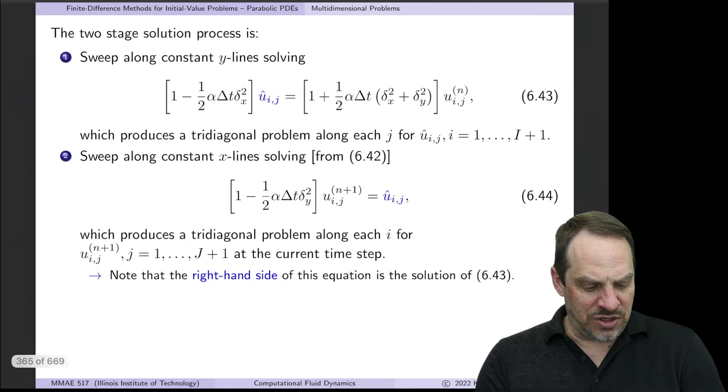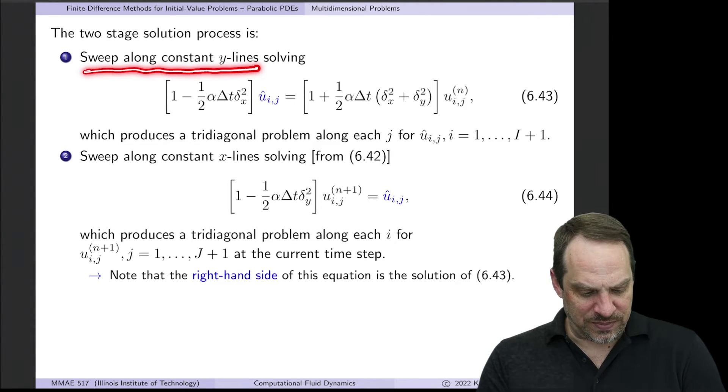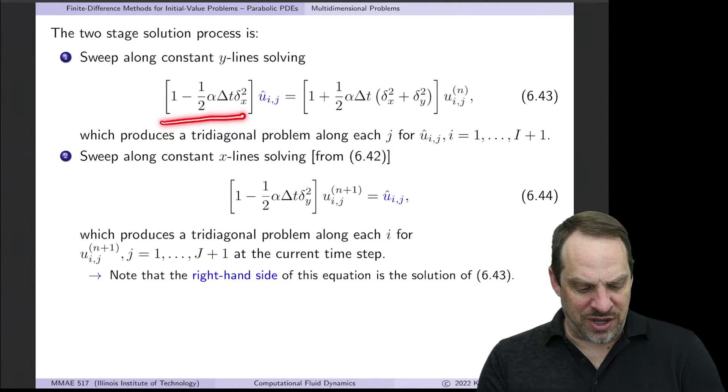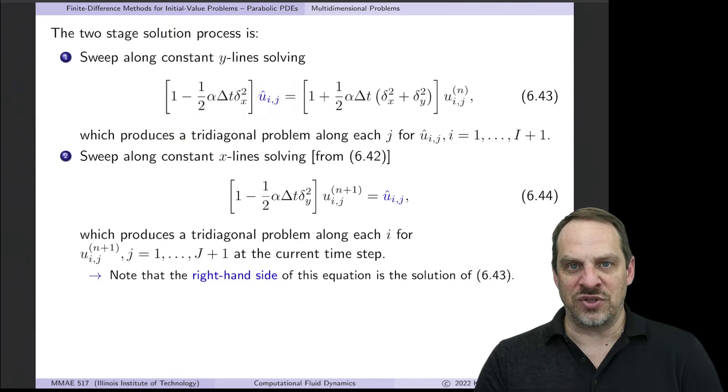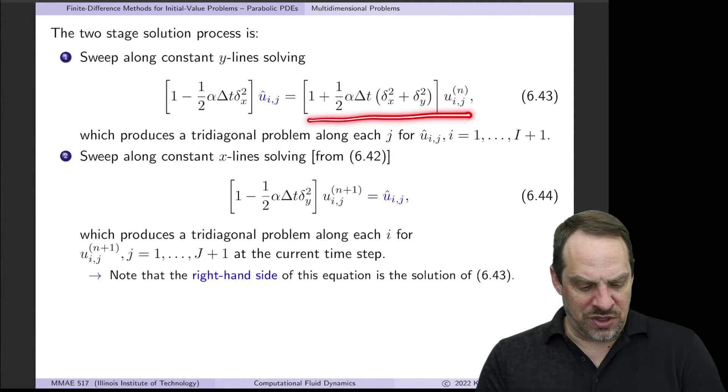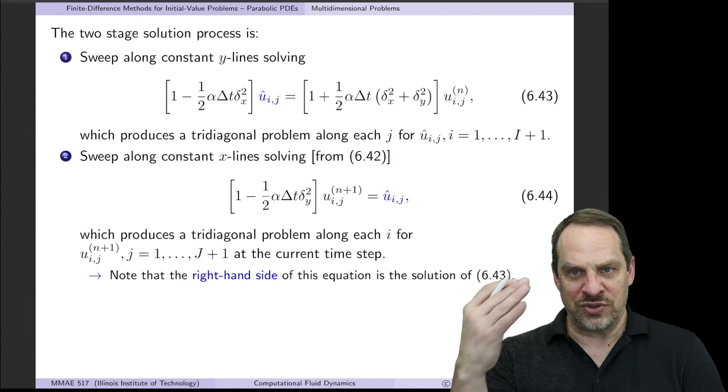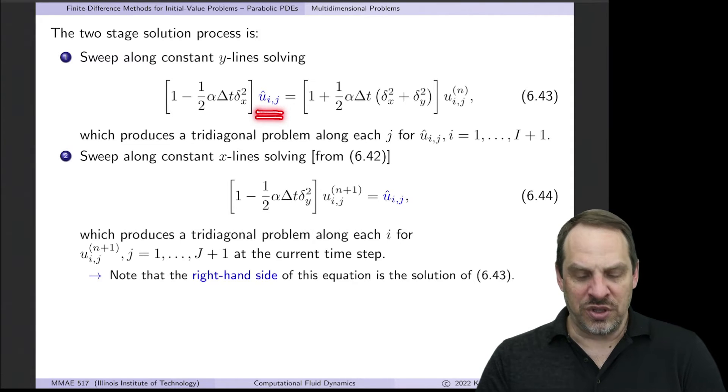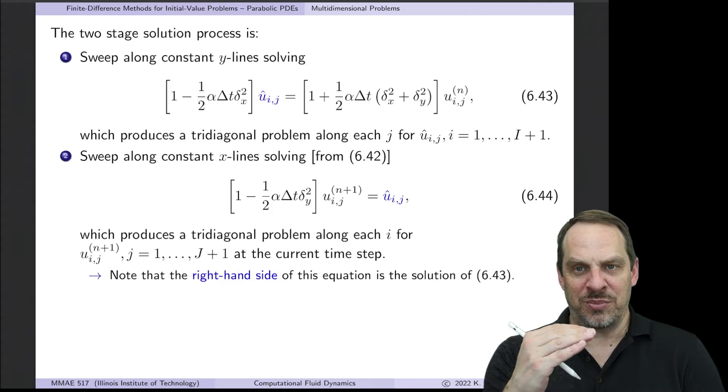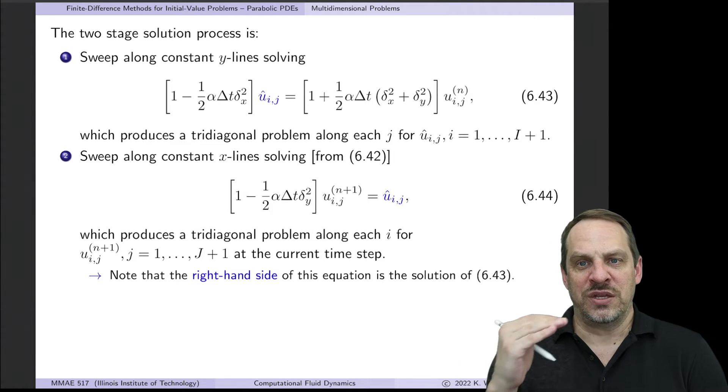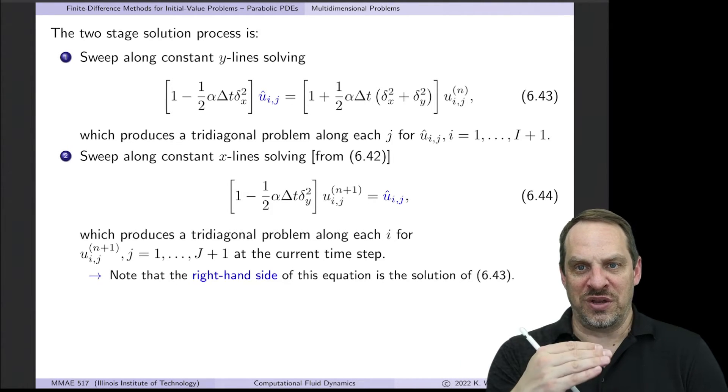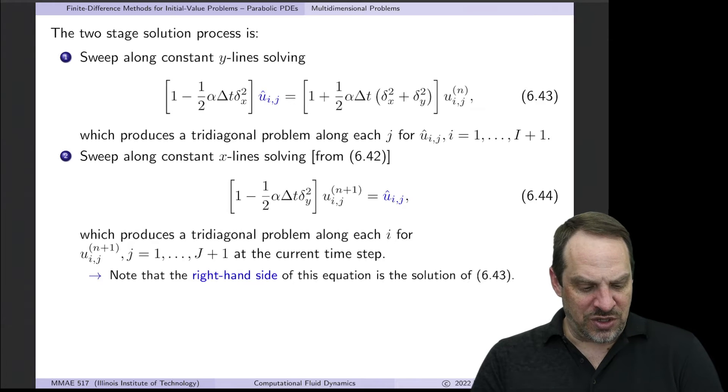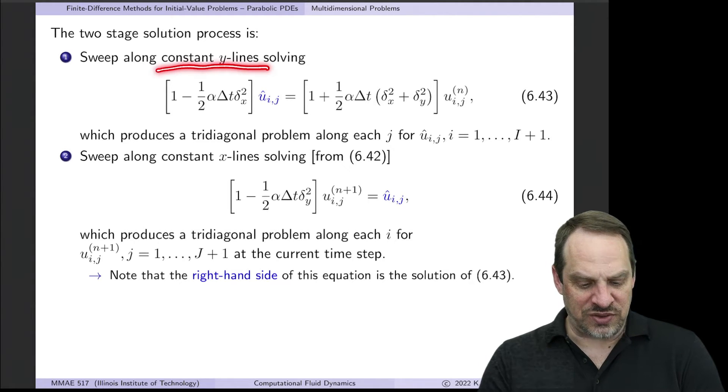So when we sweep along constant y lines, we're going to solve this expression here that I just mentioned. It's the x operator, operating on this new variable, u_ij hat, with all the other stuff on the right. When we solve that, all these tridiagonal solves, as before, because they're tridiagonal problems, we will actually get a solution for this intermediate variable, u_ij hat. It's not an intermediate time step, as was the case with the fractional step method. It's a different variable. It's an intermediate variable. We actually don't care what it is, but we're going to use that then to get the solution at the next time step. So that's during the first stage of the process, constant y lines.